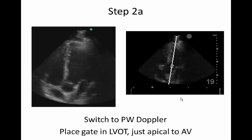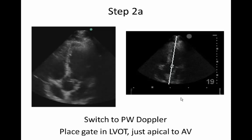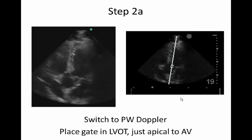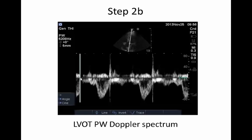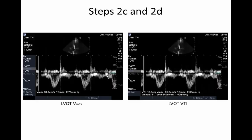So really, all you've done is gotten an apical five or apical three chamber view and lined up your continuous wave Doppler gate through the aortic valve and made some measurements. Step two: switch to pulsed wave Doppler and place the gate right in your LVOT, just apical to the aortic valve. You'll get a tracing with a slightly different velocity profile. Go into the LVOT section of your calculation package, get your Vmax and trace to get an LVOT VTI, store those, and let your machine do all the calculus.